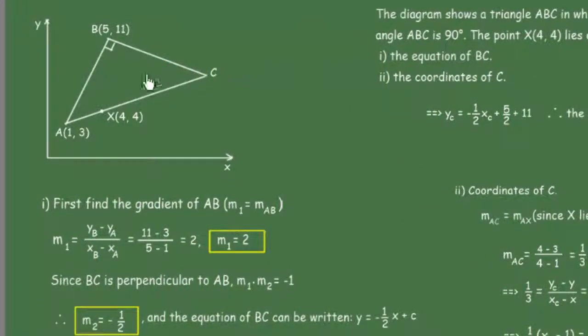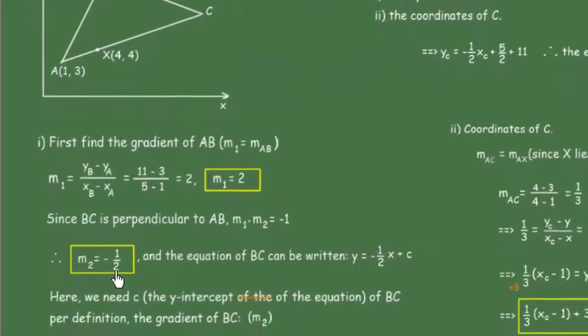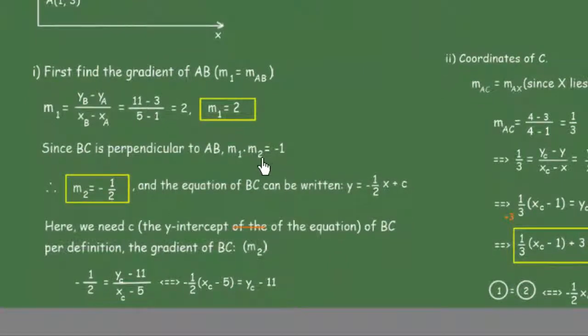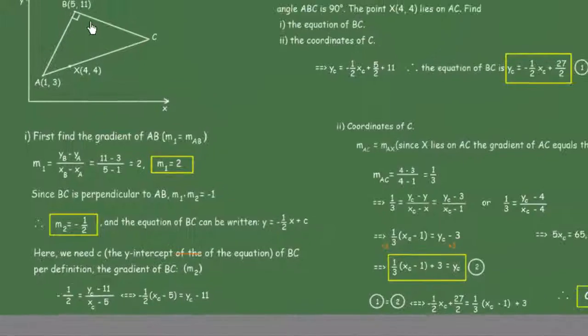Since BC is perpendicular to AB, we know that the product of the gradients of two lines that are perpendicular should be -1. That means m₂ = -1/2, and this is the gradient of the new line BC.